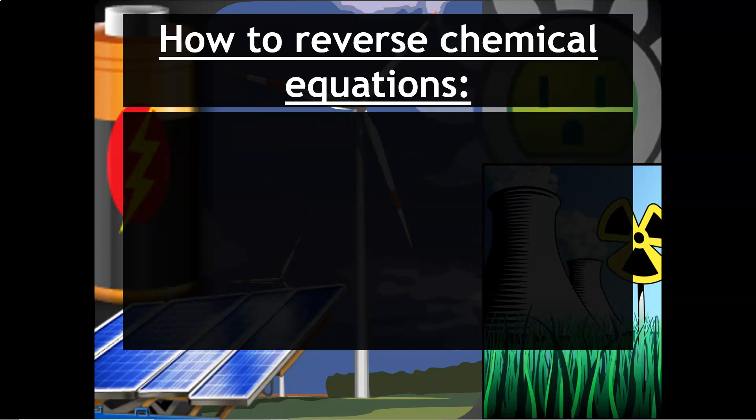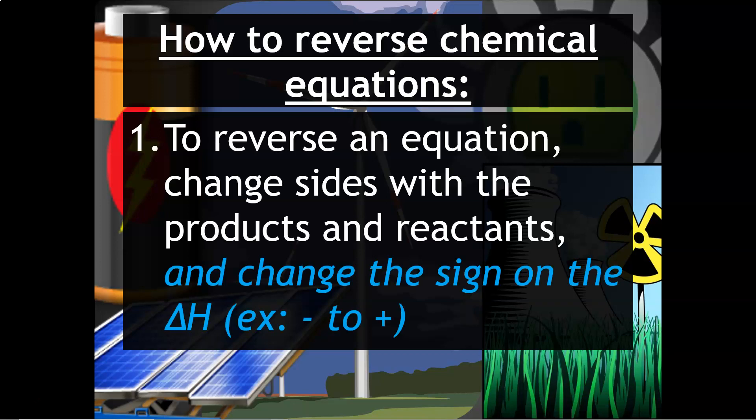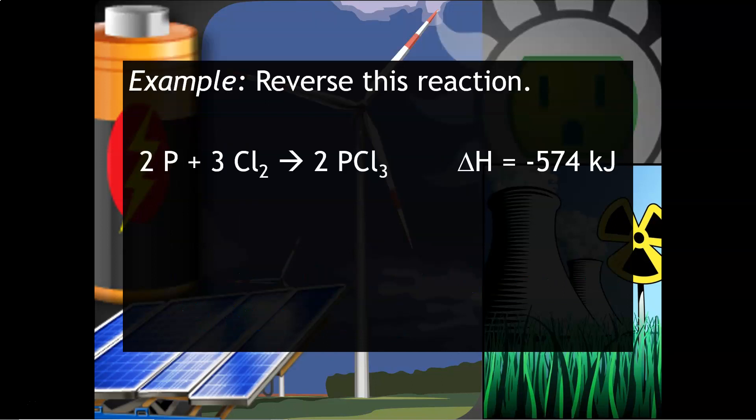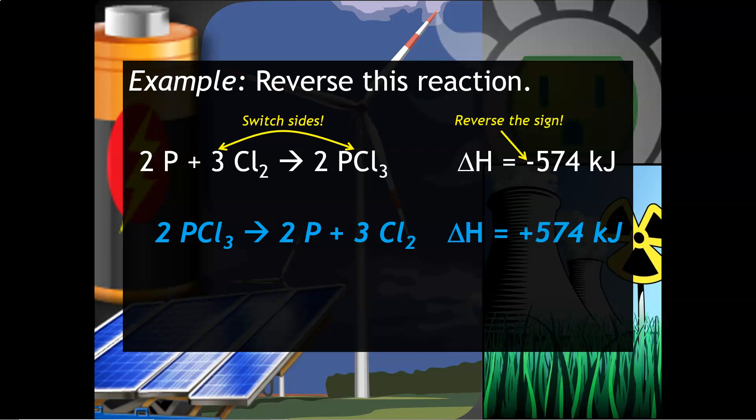Here's another skill that you have to learn. How to reverse chemical equations. To reverse an equation you want to change sides with the products and reactants and then since you're changing the reaction you have to change the sign on the delta H. So if your delta H originally started out as negative then it's going to flip to positive or vice versa. For example reverse this reaction.